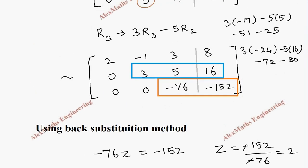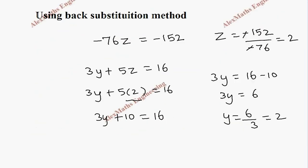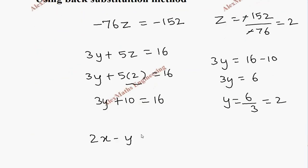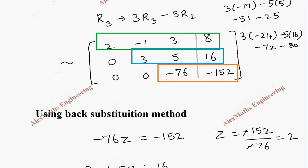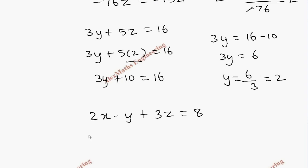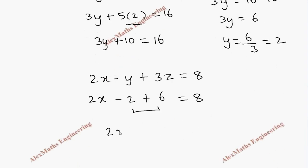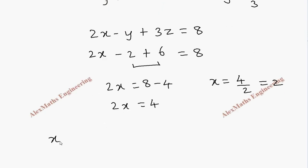Coming to the first row: 2x minus y plus 3z equals 8. Substituting y = 2 and z = 2: 2x minus 2 plus 6 equals 8. This simplifies — taking 4 to the other side it becomes minus 4, so 2x equals 4. Therefore x equals 4 divided by 2, which is 2. So we got the values x = 2, y = 2, and z = 2.